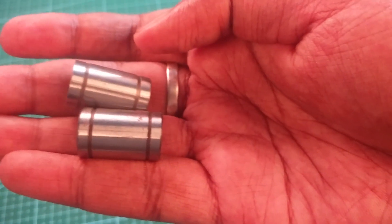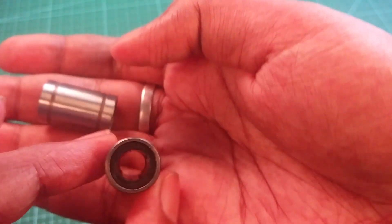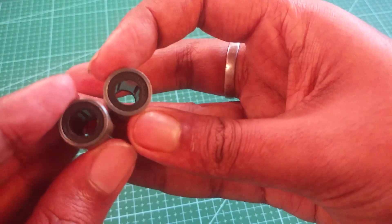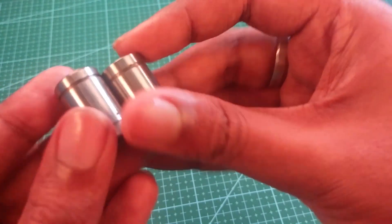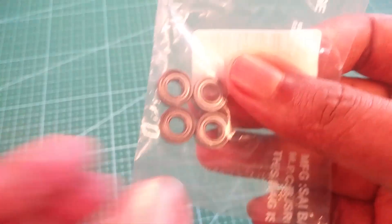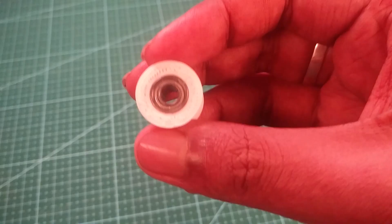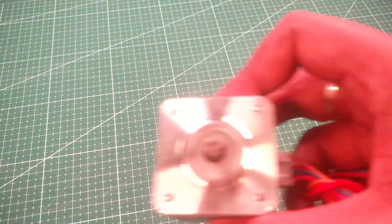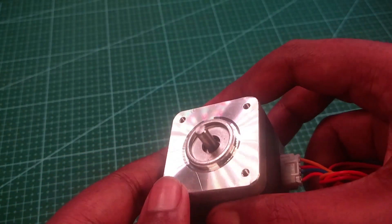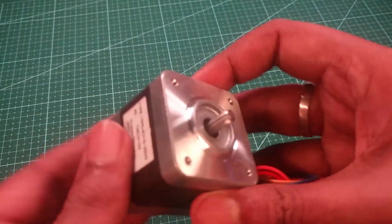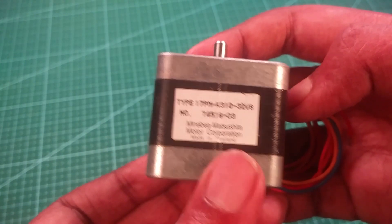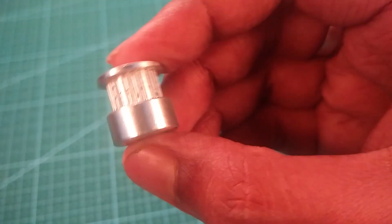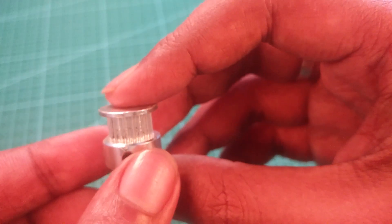As we are using 8mm rods so here we have used 8mm linear bearing LM8UU. We are using 685 ZZ ball bearing which will act as a pulley. We are using this NEMA 17 bipolar stepper motor which default step angle is 1.8 degrees.